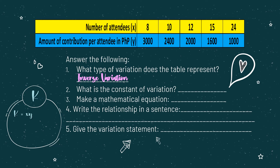The constant of variation is equal to the product of the two quantities. For instance, taking the pair X = 8 and Y = 3,000, by substitution we will have K is equal to 8 times 3,000. 8 times 3,000 is equal to 24,000. Therefore, the constant of variation is 24,000.